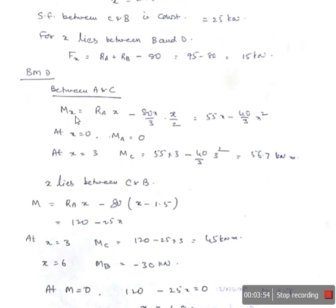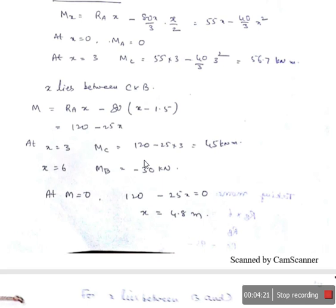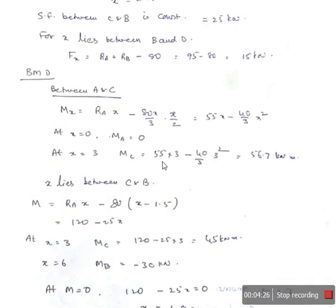For bending moment between A and C: Mx equals RA into X minus (80/3) into X into (X/2), which simplifies to 55X minus (40/3)X squared. End conditions: at X equals 0, bending moment is 0. At X equals 3 (point C), substituting gives Mx equals 55 into 3 minus (40/3) into 9, which equals 56.7 kilonewton meters.